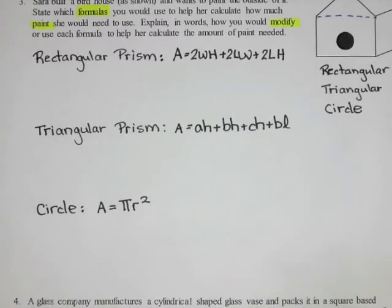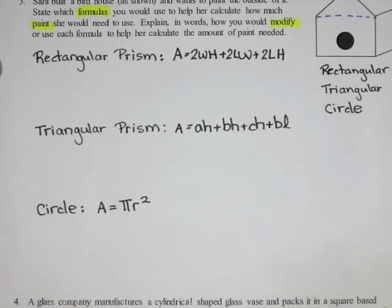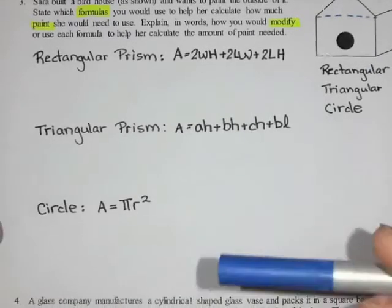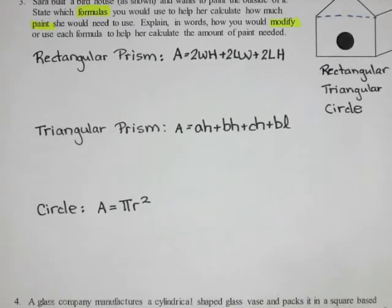That's the first part of the question done — stating which formulas to use: the rectangular prism, triangular prism, and circle. The second part asks how I would change those formulas to make them work for this specific shape.